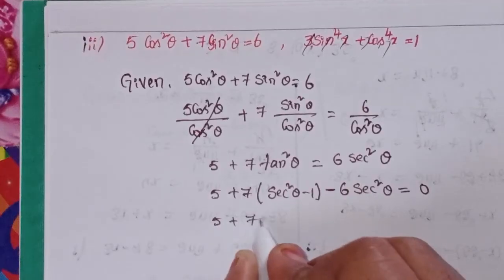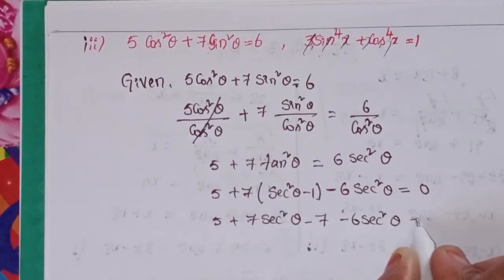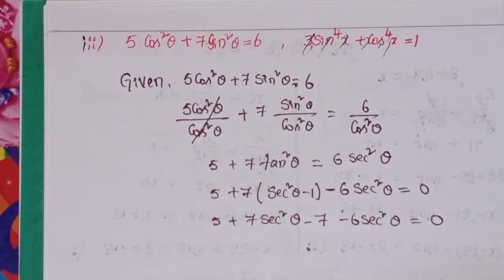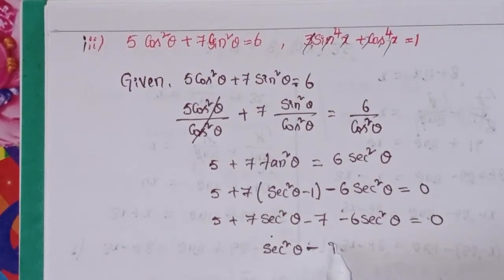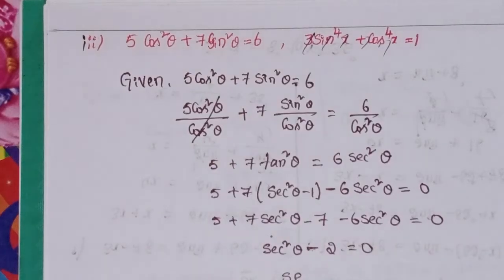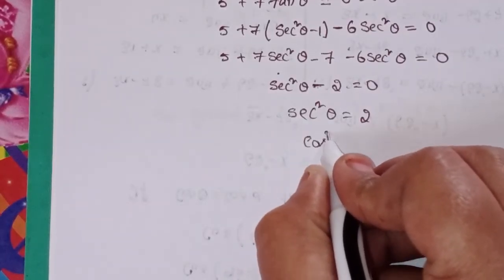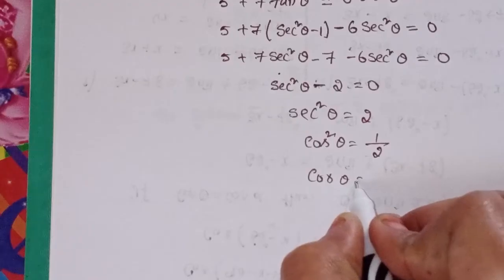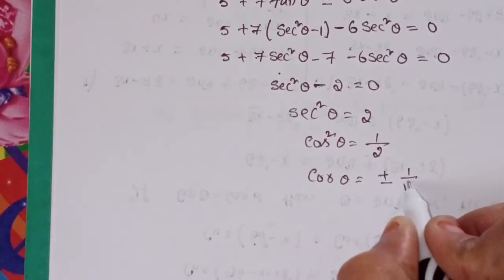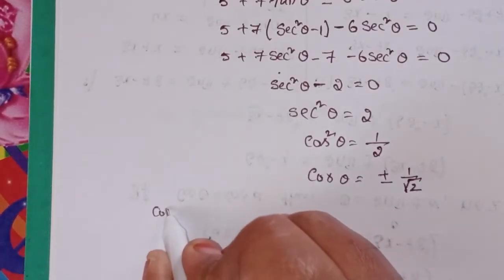Rearranging: 5 plus 7 tan squared theta minus 6 sec squared theta equal to 0. Using tan squared theta = sec squared theta minus 1: 7 sec squared theta minus 7 minus 6 sec squared theta plus 5 equal to 0, giving sec squared theta minus 2 equal to 0. So sec squared theta = 2, meaning cos squared theta = 1/2, and cos theta = ±1/√2.